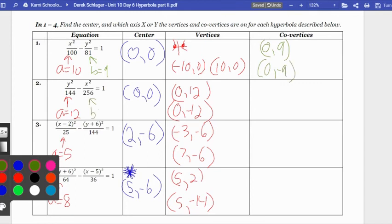In the second one here, the square root of 256 is 16, and that's underneath the x squared term, so that's left and right. So we're going to go left 16 from (0, 0), the center, and we're going to go right 16.